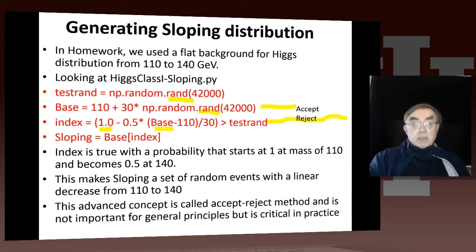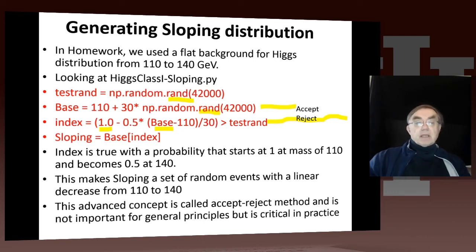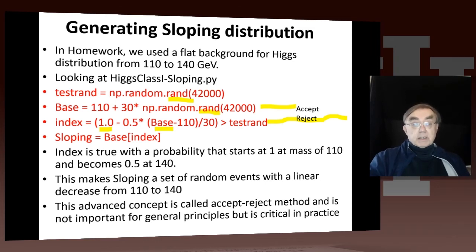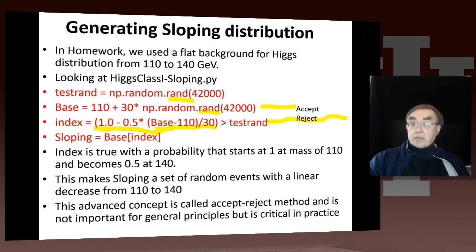Therefore, we get on average half as many events at mass 140 as we do at mass 110. This is a very good example of the accept-reject method — very simple, and it's the general idea. You generate events, take the maximum value of the distribution — which is here 1 at mass 110 — and generate events according to that flat distribution. Then you look at the parameters of the event, which here is only one number: the mass. You look at the relative probability you want — it starts at 1 at 110 and goes to 0.5 at 140, so it's 0.75 at 125. You calculate for each event what the actual distribution value is, then test it against an independent random number: if the distribution value is bigger than the random number, you accept it; if it's less, you reject it.